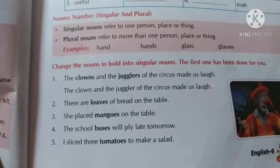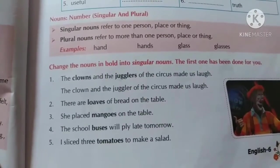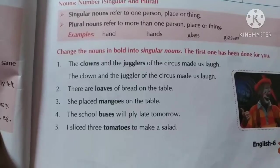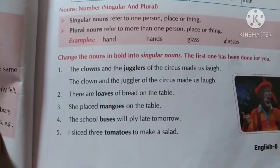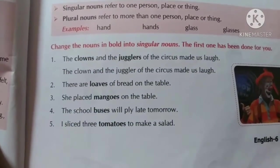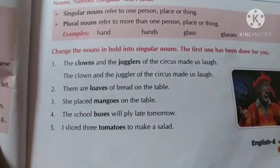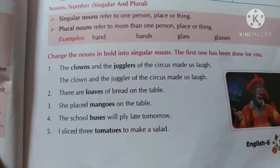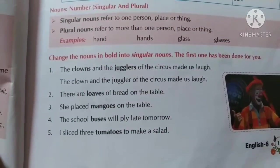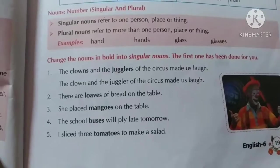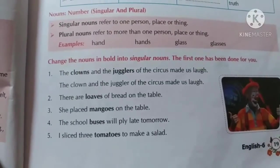'There is a loaf of bread on the table.' 'She placed mangoes on the table' — 'She placed a mango on the table.' Yahan pe koi 'are' nahi hai, toh hum log ko kuch change nahi karna hai. 'The school buses will fly late tomorrow' — 'The school bus will fly late tomorrow.' Buses ki jagah bus aa jayega. 'I sliced three tomatoes to make a salad' — 'I sliced a tomato to make a salad' ya 'one tomato.' Dono correct hain.